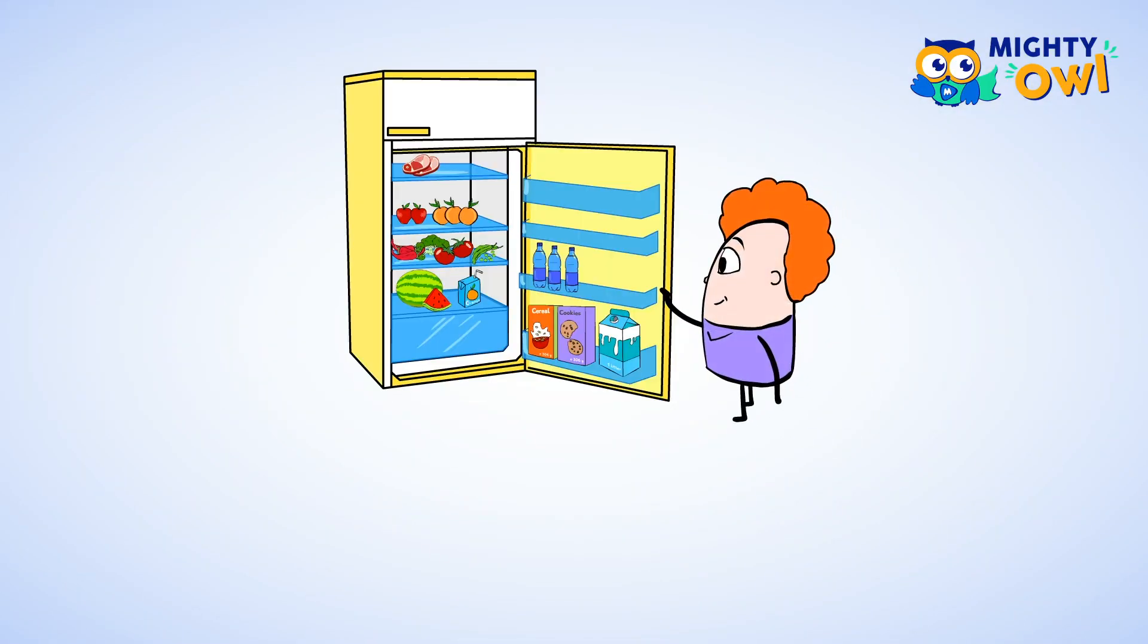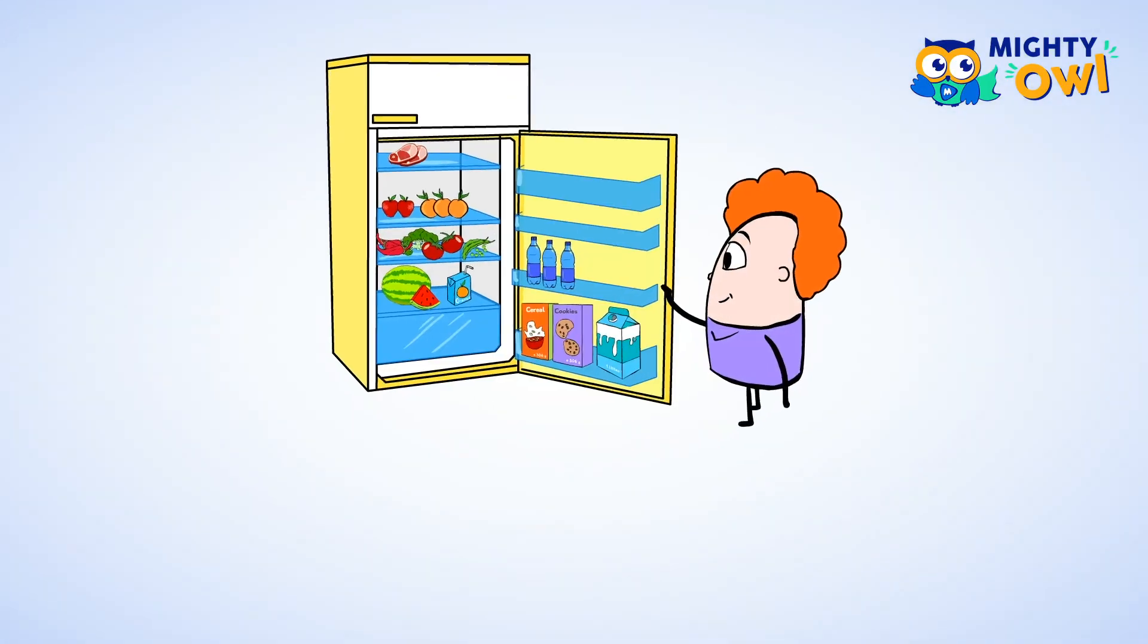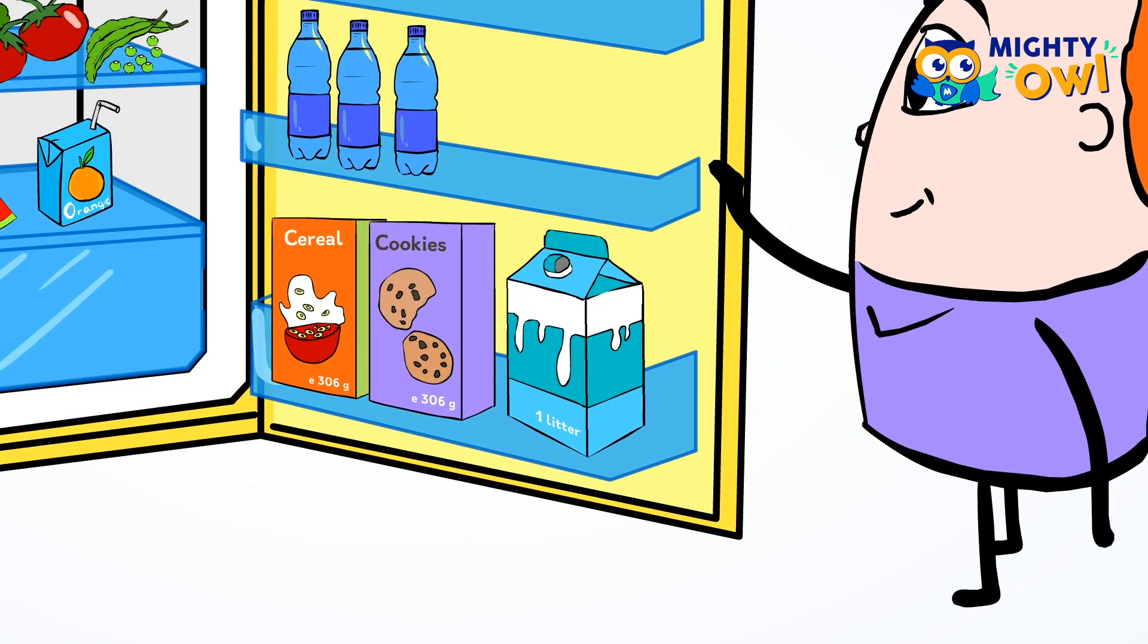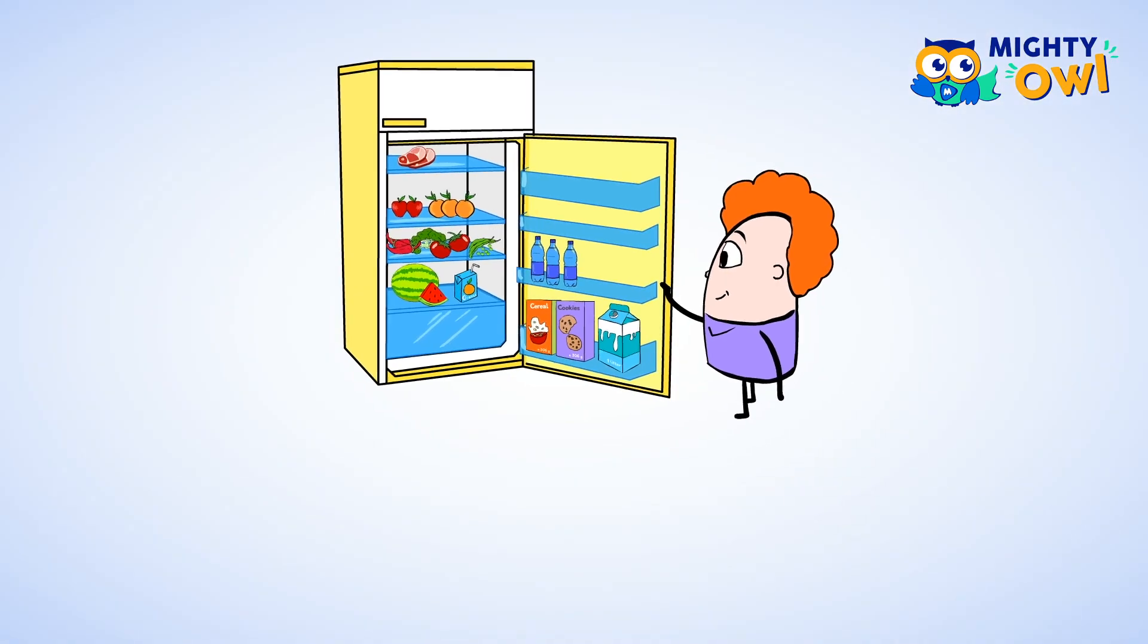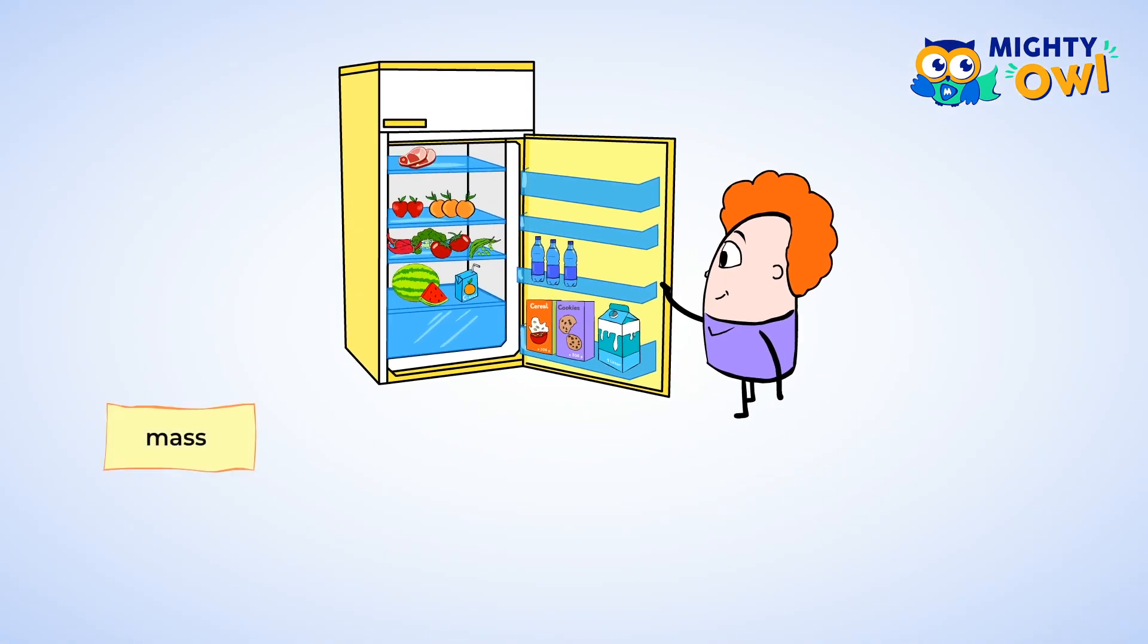Have you ever looked at containers in your refrigerator, or looked at the boxes of cereal or cookies that you may have at home? Each of them will have some numbers followed by a couple of letters.